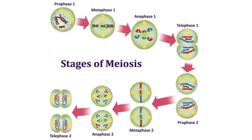In metaphase first, chromosomes get arranged at the equator of the cell. In anaphase first, the two chromosomes of each bivalent separate and move to the opposite ends of the cell; the sister chromatids remain attached to each other. In telophase first, the nuclear membrane reappears, followed by cytokinesis, which gives rise to a dyad of cells.